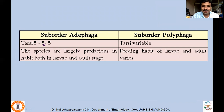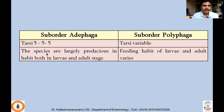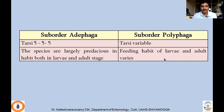Other differentiating characters include the tarsal formula — tarsi 5-5-5 in Adephaga, meaning foreleg has five tarsal segments, midleg five, and hindleg five. Whereas in Polyphaga it may vary — it may be 5-5-4. Most Adephagans are largely predaceous, both in larval and adult stages. Whereas in Polyphaga, the feeding habit of larva and adult varies — they are adapted to a variety of feeding habits.